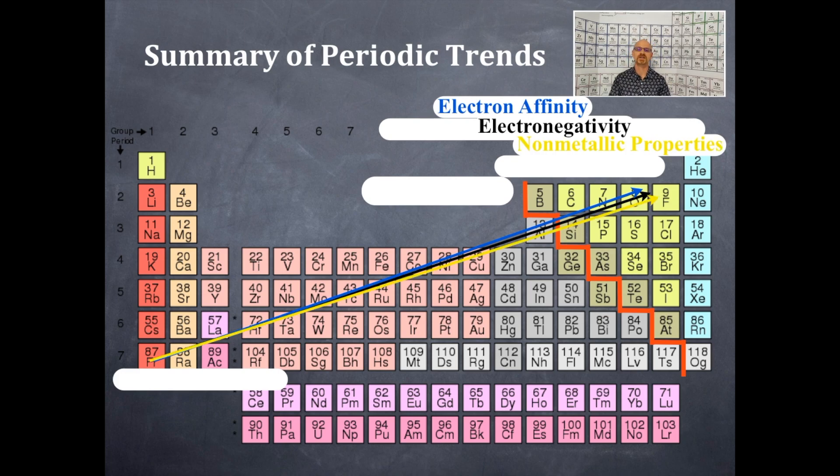Non-metallic properties again follow the same trend, that is, up and to the right. Ionization energy follows the same trend, that is, up and to the right.